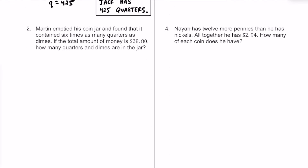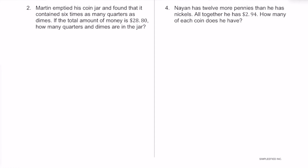Here's another example. In number two, Martin emptied his coin jar and found that it contains six times as many quarters as dimes. If the total amount of money is $28.80, how many quarters and dimes are in the jar? Let's define Q as the number of quarters and D as the number of dimes.